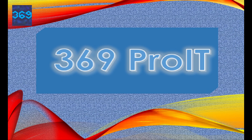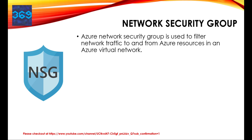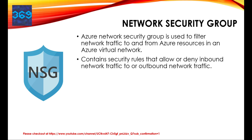Welcome back. So let's get started with our discussion on network security groups. Network security groups are used to filter network traffic to and from Azure resources in an Azure virtual network, or in short, VNets. A network security group contains security rules that allow or deny inbound network traffic to, or outbound network traffic from, several types of network resources. For each rule, you can specify source and destination, port and protocol. We're going to look at all those things that are required to configure the NSG rule.